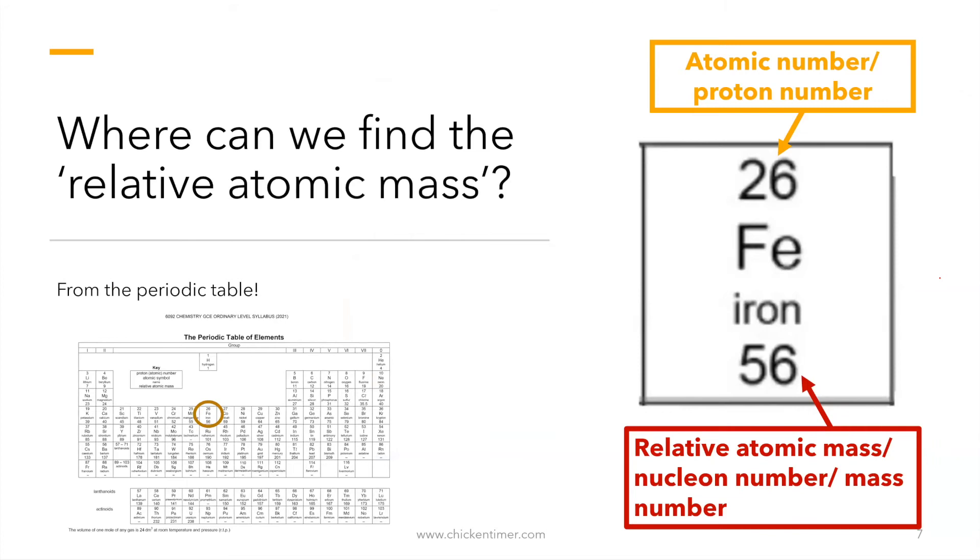So where can you find the relative atomic mass? You see on top, you go to this one. Just now I go to that one. Then after that, you see two numbers. The one on top, the smaller number. Smaller number is the atomic mass, atomic number, then proton number. The bigger number is this. Bigger number is relative atomic mass, nuclear number, and mass number.